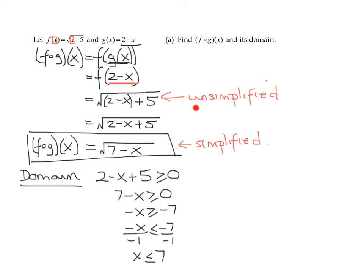That was using the unsimplified form. What happens if I use the simplified form? Well, how do I take the domain of a square root function? I say whatever lives under the radical has to be greater than or equal to 0. So I've already taken care of the simplified form. This is my domain if I'm asked for it as an inequality.